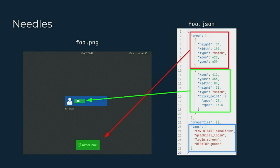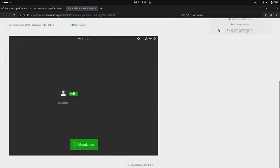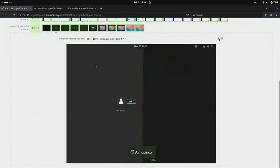The last rectangle shows the tags of the needle. One needle can have multiple tags. Remember the second one — 'graphical_login' — because we will use it in the next core concept, which is the test itself. Tests can be written in Perl and Python. After importing the test API, we just need to call the assert and click subroutine to do the visual test and click the necessary click point. That's how a needle looks and how it works.